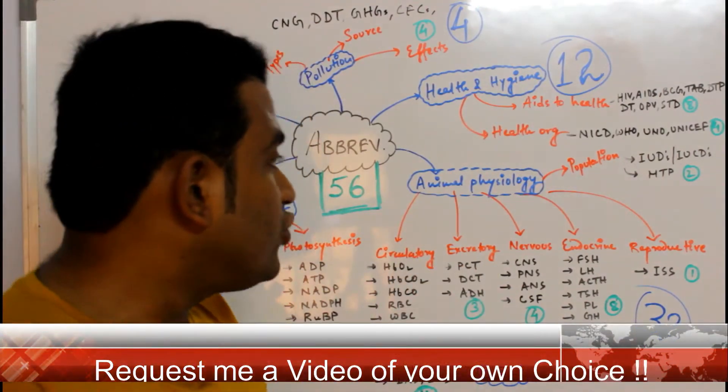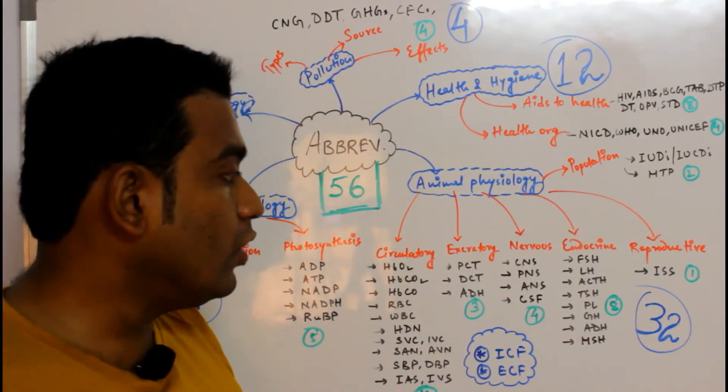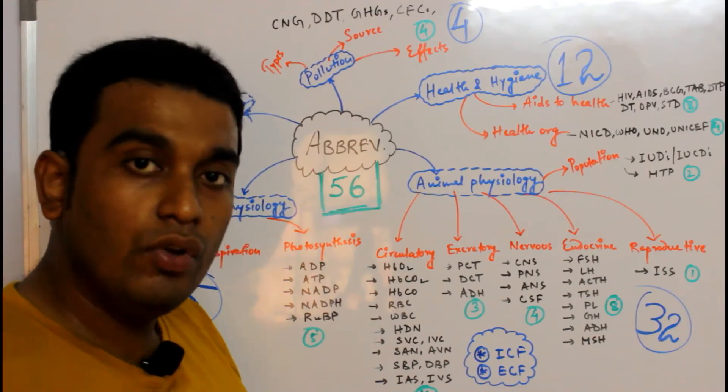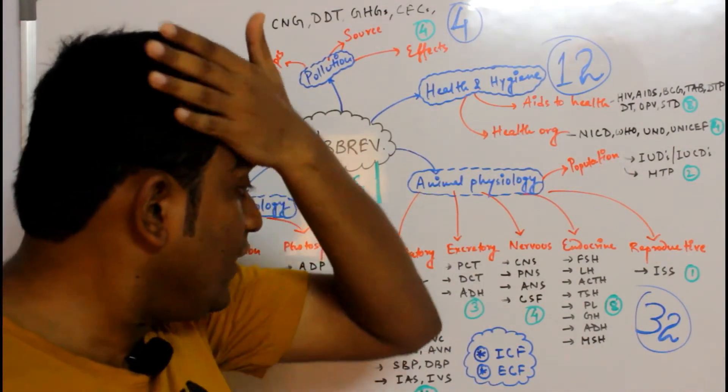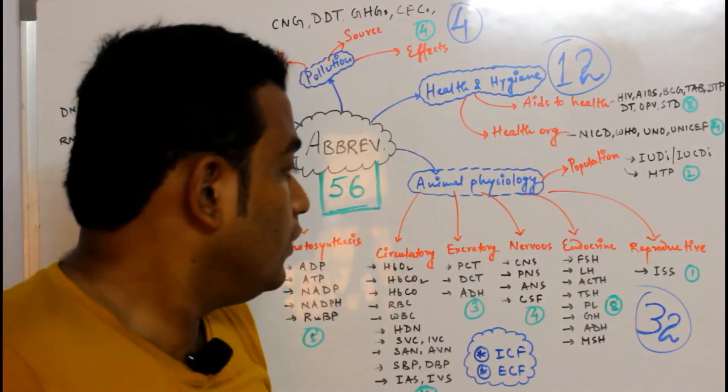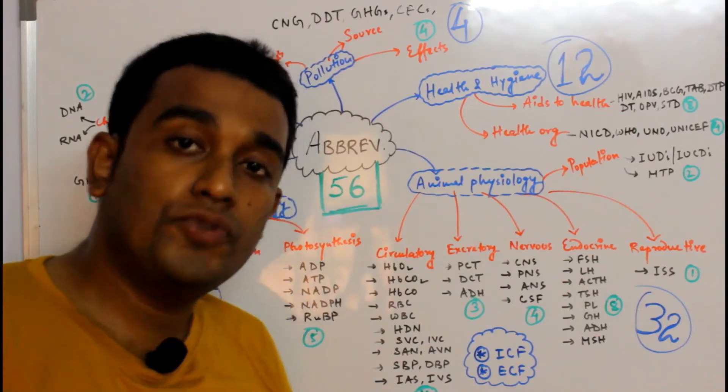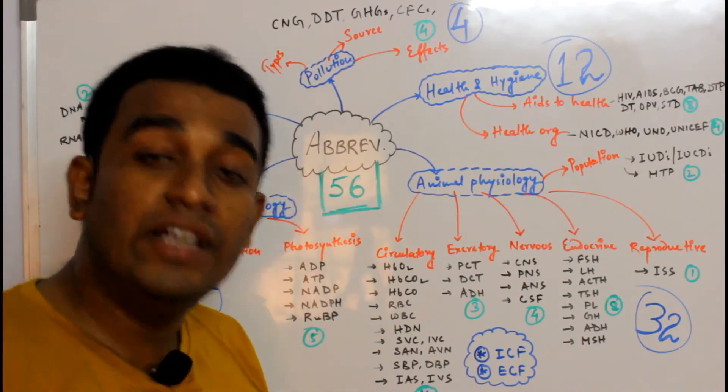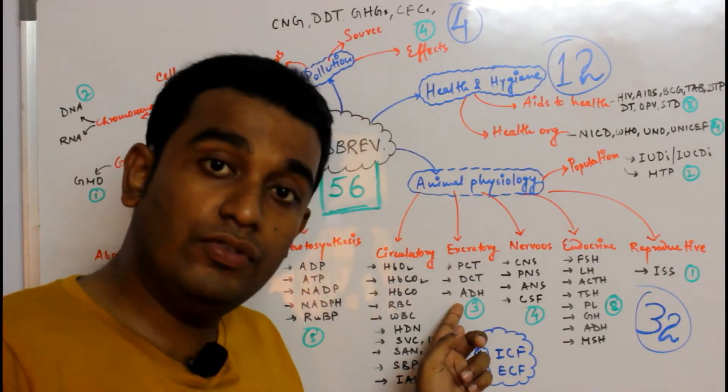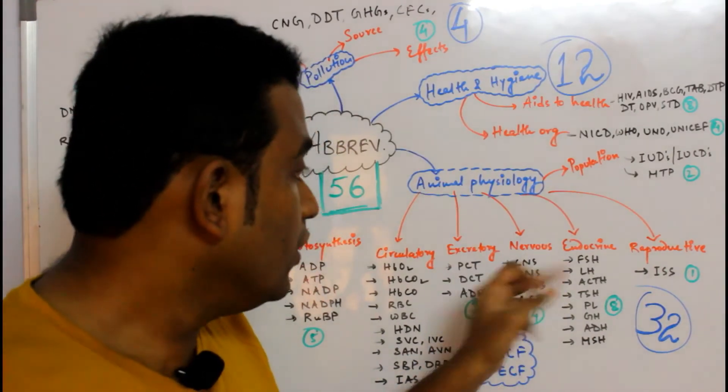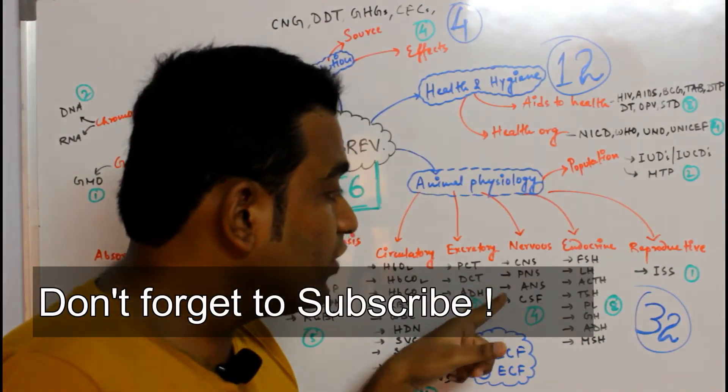Moving to the excretory system, I have got PCT (Proximal Convoluted Tubule) and DCT (Distal Convoluted Tubule), which are structures of the nephron. ADH (Anti Diuretic Hormone), alternatively known as vasopressin, is associated with water reabsorption and diabetes insipidus. From nervous system: CNS (Central Nervous System), PNS (Peripheral Nervous System), ANS (Autonomic Nervous System), and CSF (Cerebrospinal Fluid).